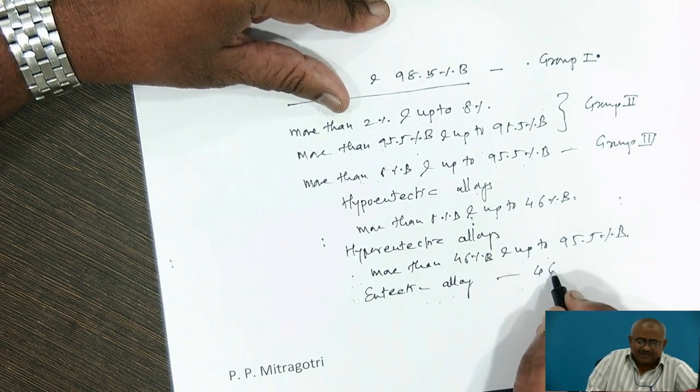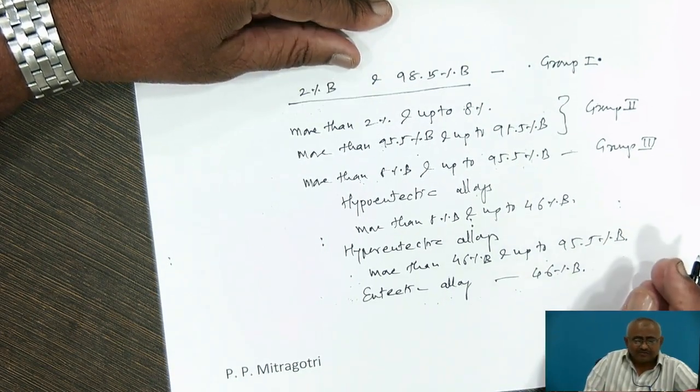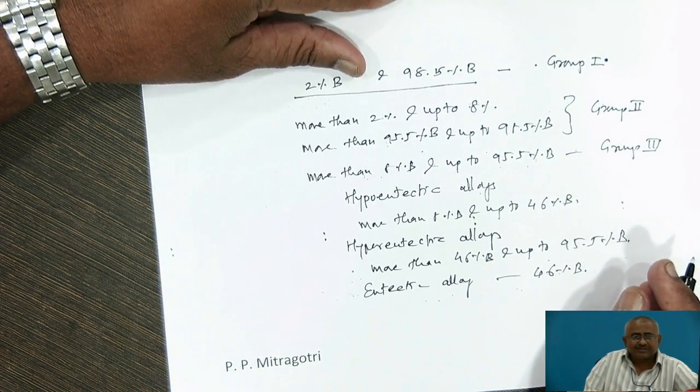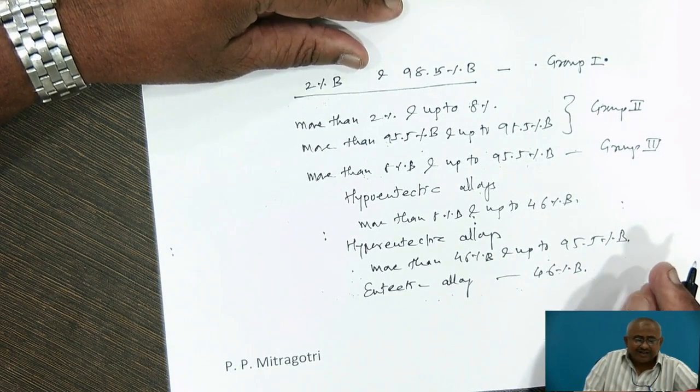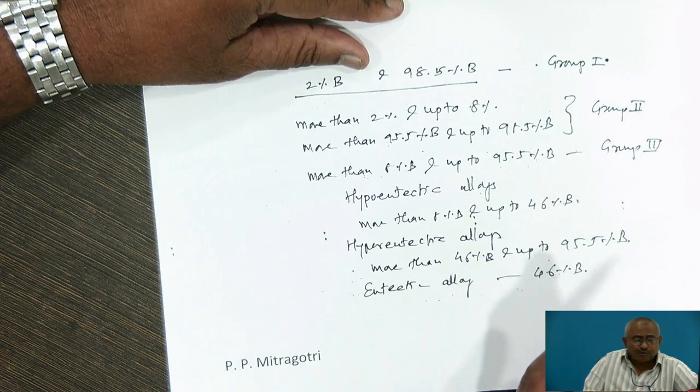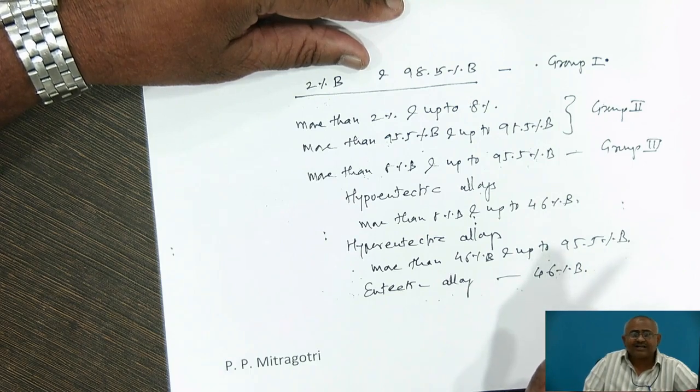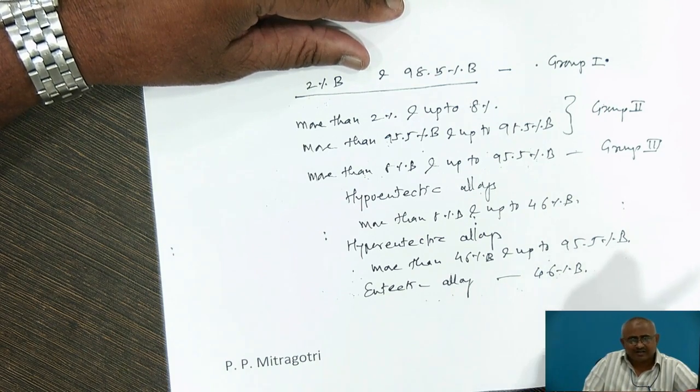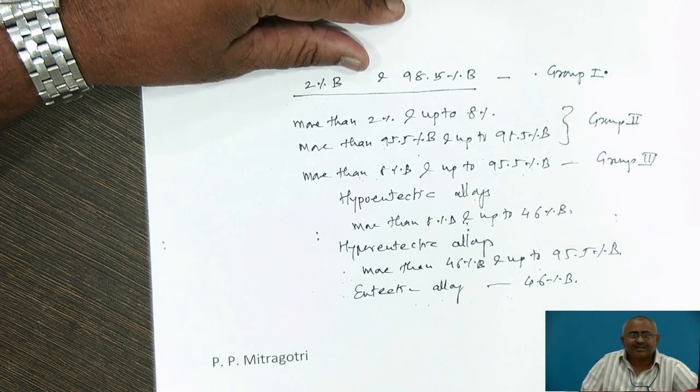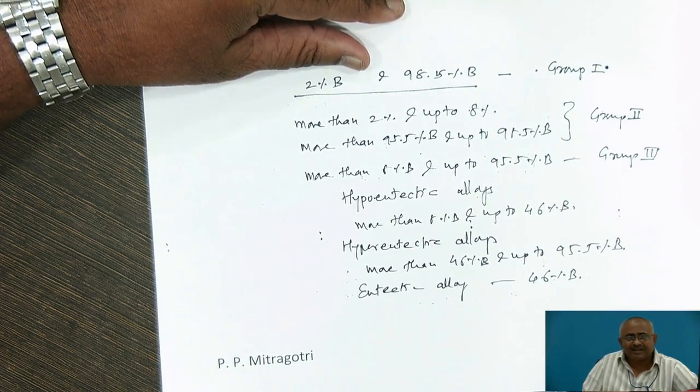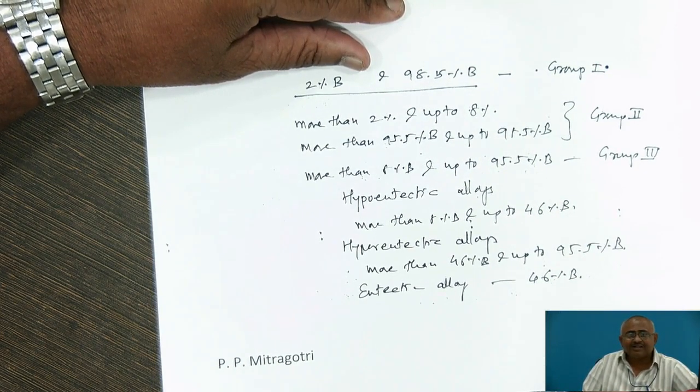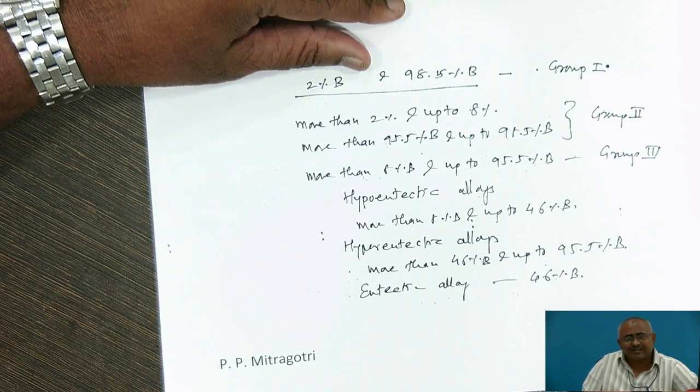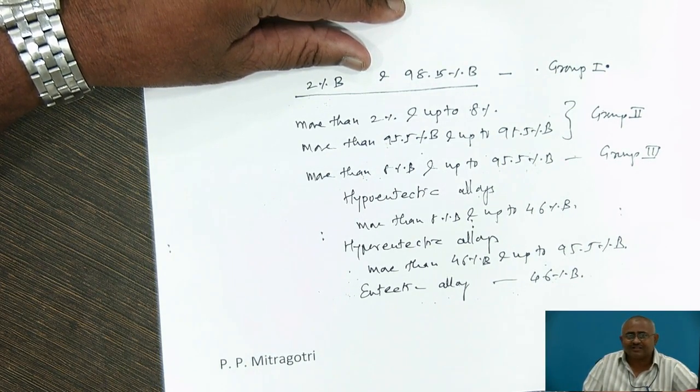Eutectic alloys contain 46% B. Group 1 alloys can be hot worked as well as cold worked. But alloys containing more than 2% B and up to 8% B cannot be cold worked, but by heating them above solvus line, we can hot work them very easily.